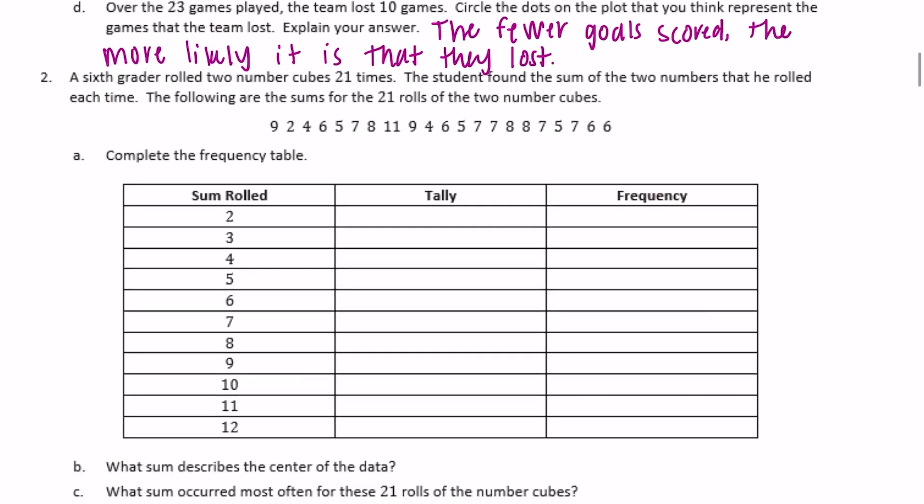Number 2, a 6th grader rolled 2 number cubes 21 times. The student found the sum of the 2 numbers that he rolled each time. The following are the sums for the 21 rolls of the 2 number cubes. Complete the frequency table. So let's complete the frequency table first and then we'll answer some questions about it.